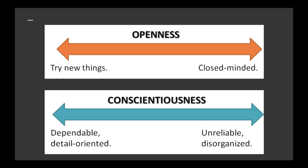The second trait is conscientiousness. Do you always fold your laundry before putting it away? Individuals high on conscientiousness tend to be detail-oriented, dependable, and reliable. At the other end, individuals may be perceived as lazy, unreliable, and tend to be more spontaneous.